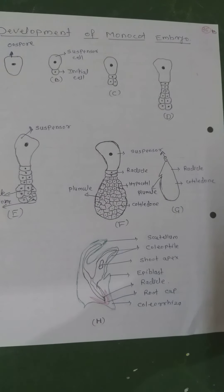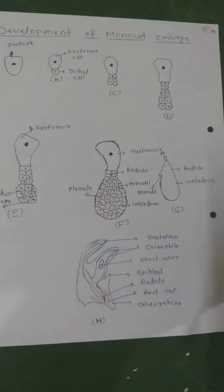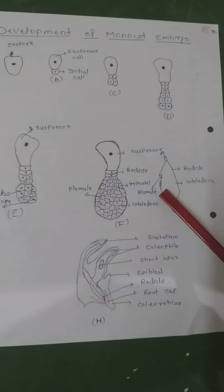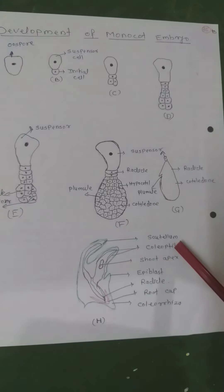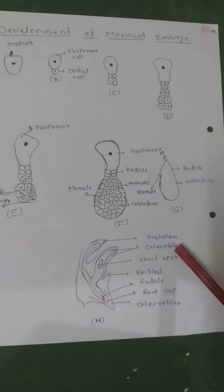In monocotyledon plants, development of the monocot embryo is the same as in dicots up to the octant stage; the difference appears later. In monocot embryo, a single cotyledon occupies the terminal position and the plumule is lateral. The single shield-shaped cotyledon is called the scutellum. The protective sheath of the plumule is called the coleoptile, and that of the radicle is the coleorhiza.